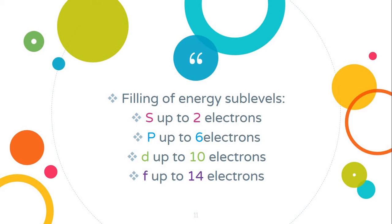Filling of the energy sublevels. The s sublevel takes up to 2 electrons only. p sublevel takes up to 6 electrons only. d sublevel takes up to 10 electrons. And f takes up to 14 electrons.